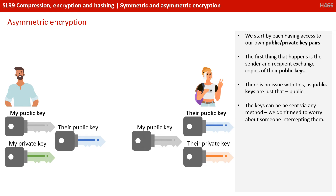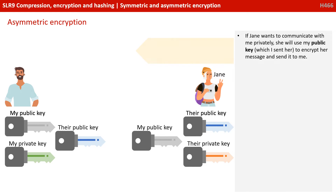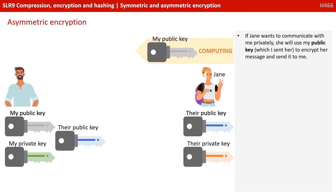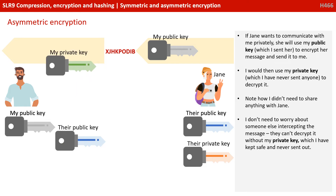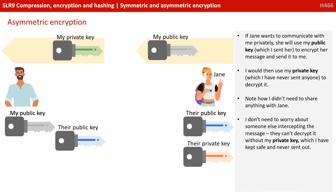We don't need to worry about someone intercepting them. If Jane wants to communicate with me privately, she will use my public key, which I sent her, to encrypt her message and send it on to me. I would then use my private key, which I've never sent anyone, to decrypt it. Note how I didn't need to share anything with Jane. They can't decrypt it without my private key anyway, which I've been keeping safe at my end and never sending out.